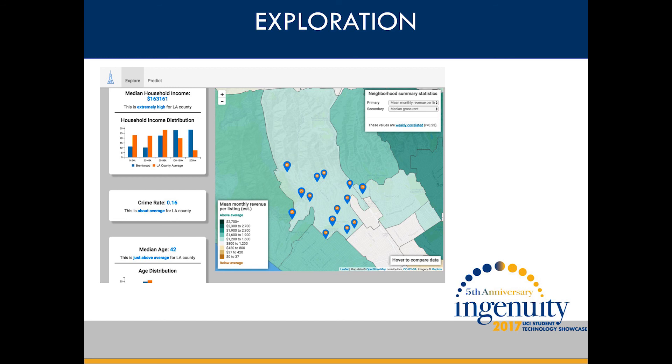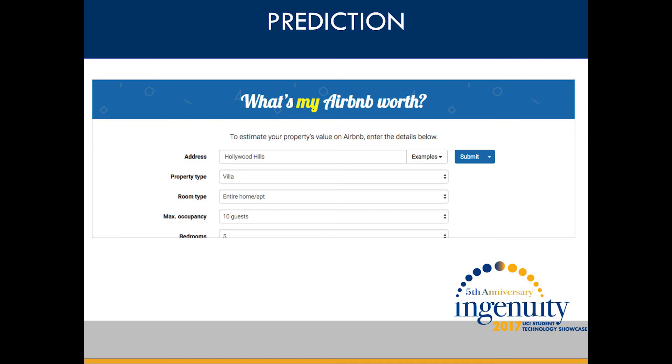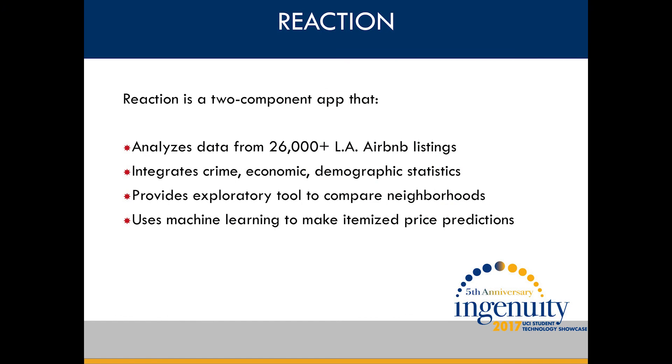The second part of the app is a predictive tool. The biggest question property owners have is: how much is my place going to be worth? You tell us where you're located, how many bedrooms and bathrooms you have, what amenities you have, and our algorithm does the rest. Our app uses machine learning, a powerful branch of AI that allows computers to learn complex rules from data — like how much a swimming pool is worth attached to a three-bedroom house in Malibu. Using data from old listings, we can predict what a new place is going to be worth, and the average error is just about $18. The visualization side lets you explore and compare neighborhoods, the predictive tool provides insight into how you should price your listing, and you can even find your closest competitors. Thank you, and we hope to see you at our demonstration.